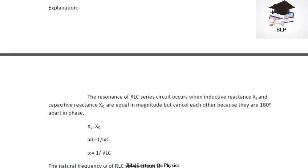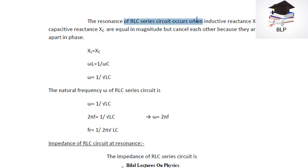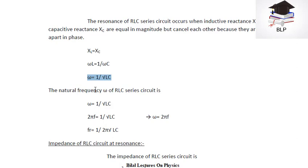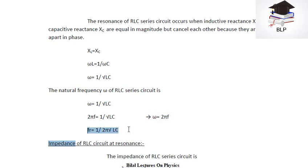The resonance of an RLC series circuit occurs when inductive reactance and capacitive reactance are equal in magnitude but cancel each other, because they are 180 degrees apart in phase — so they are rotating reciprocal to each other. That is why capacitive reactance and inductive reactance will be equal in magnitude. Here XL equals XC, and omega L equals 1 over omega C, which gives omega equals 1 over the square root of LC. Since omega equals 2 pi f, the frequency comes out to f equals 1 over 2 pi times the square root of LC.